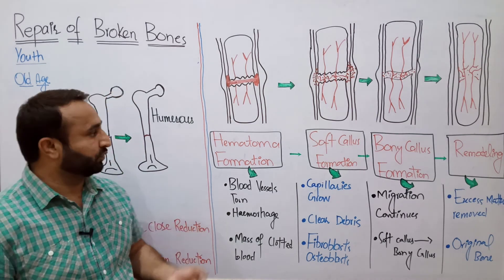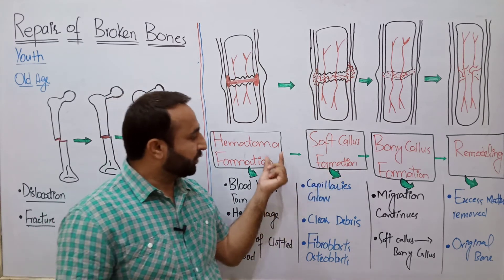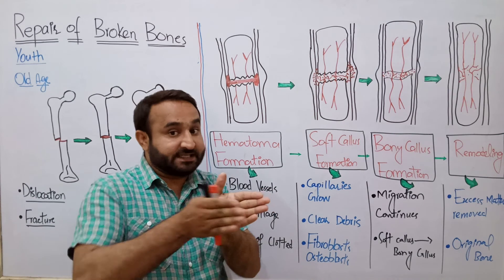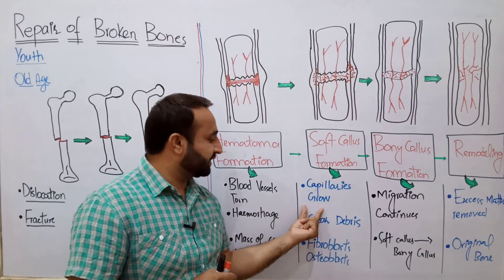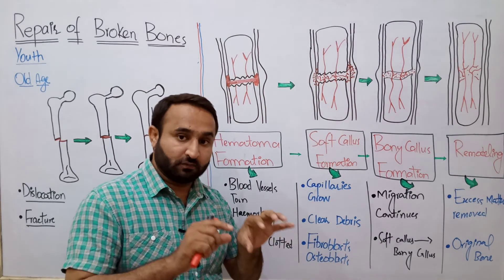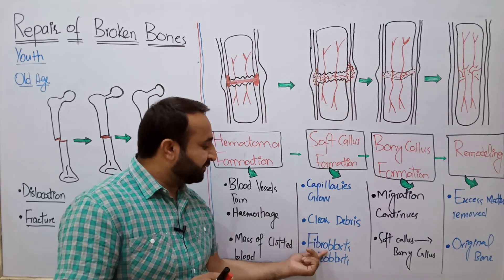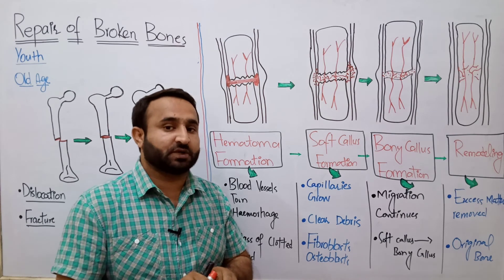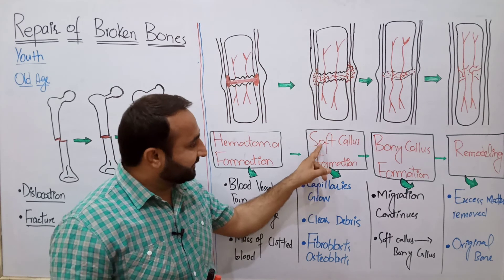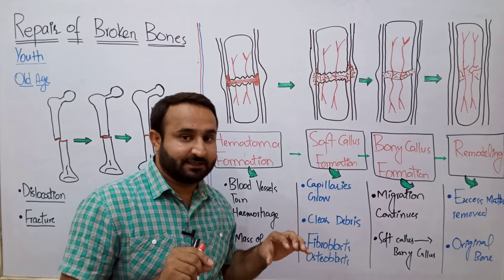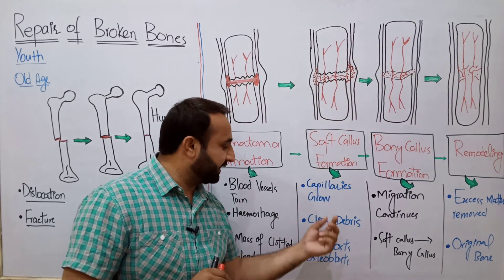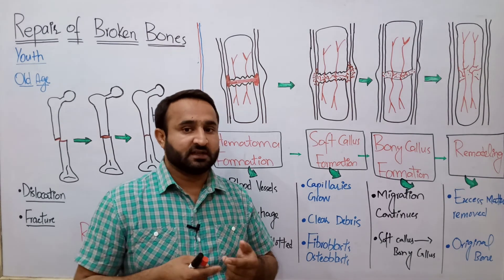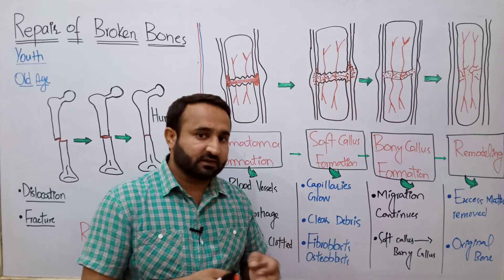Phase 2 — Soft Callus Formation: After hematoma formation, capillaries start growing. Once the bone has been realigned (reduced), blood capillaries begin to form. The debris — waste materials and accumulated blood — is cleared. Fibroblasts and osteoblasts migrate to the site. Fibroblasts begin forming connective tissue fibers, while osteoblasts begin forming osteocytes. At this stage, no bone has formed yet — no mineralized or hard mass exists. Everything is still soft: the capillaries, fibroblasts, and osteoblasts. This is called soft callus. The word 'callus' means newly synthesized, undifferentiated cells that are not yet differentiated into bone cells or blood vessels.